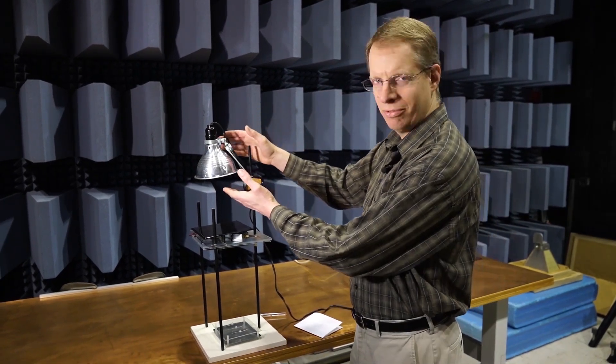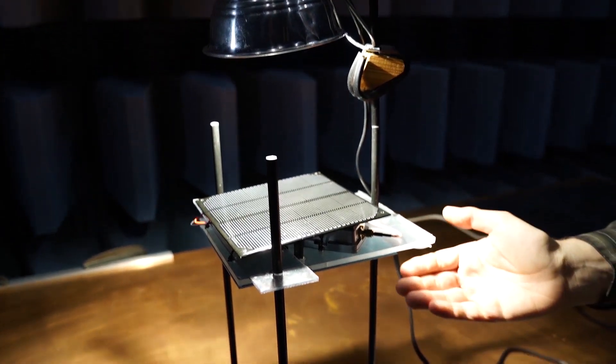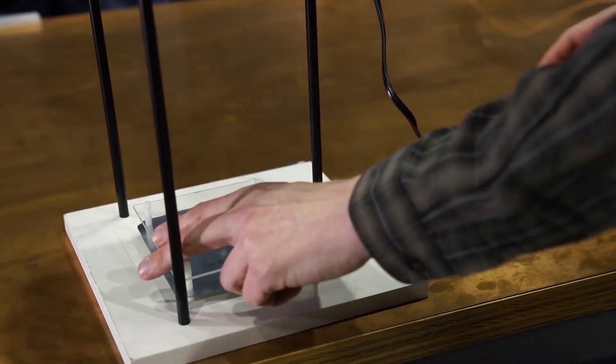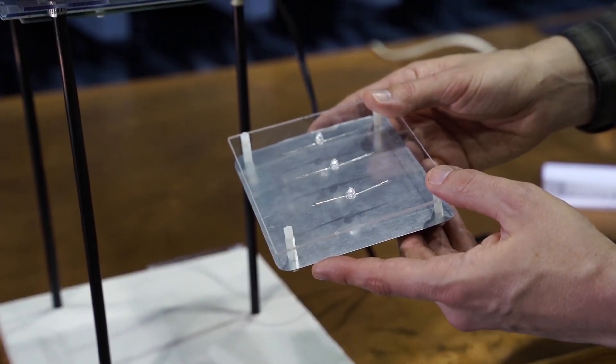For our demonstration we have the Sun simulated by a lamp, the spacecraft which has a solar panel and a wireless power transmitter, and on the ground we have a power receiver which we're showing here with a bunch of LEDs.